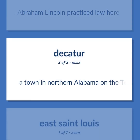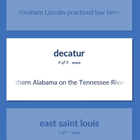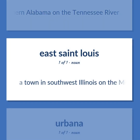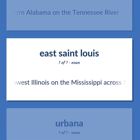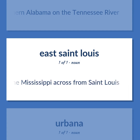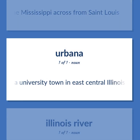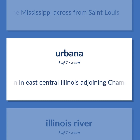Florence: A town in northern Alabama on the Tennessee River. A town in southwest Illinois on the Mississippi across from St. Louis. Urbana: A university town in east-central Illinois adjoining Champaign.